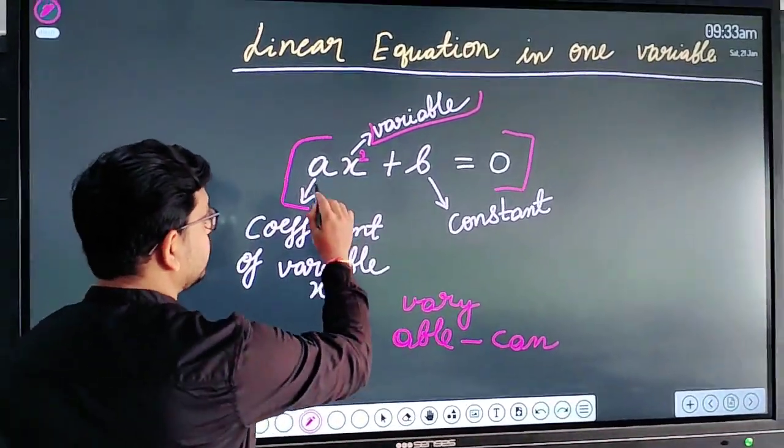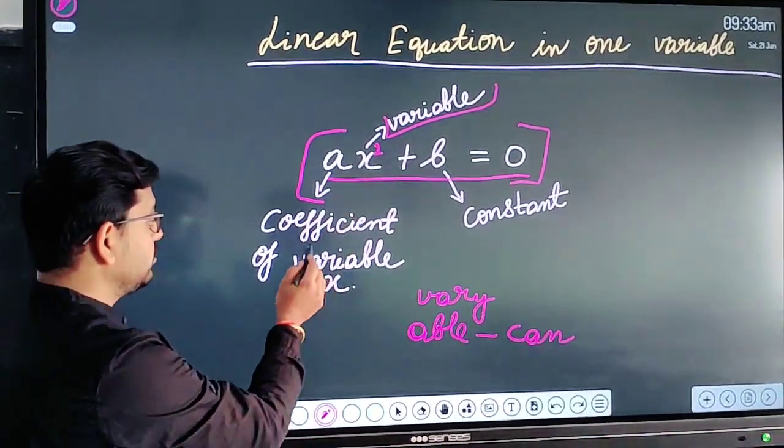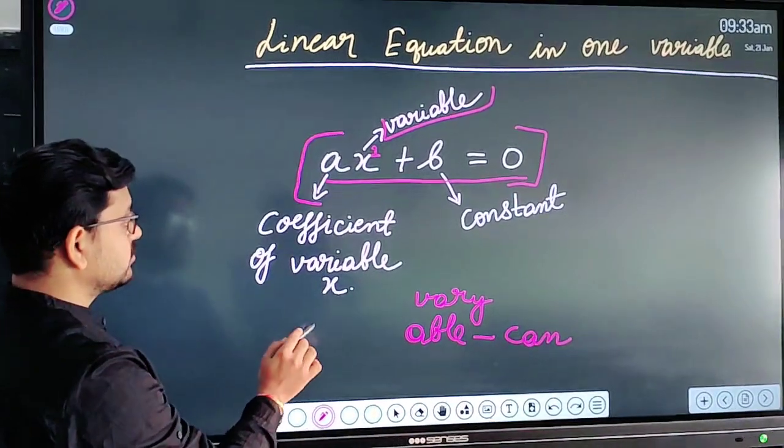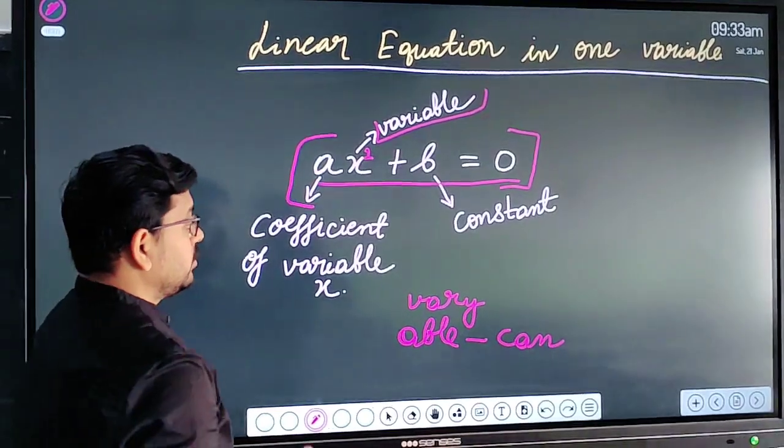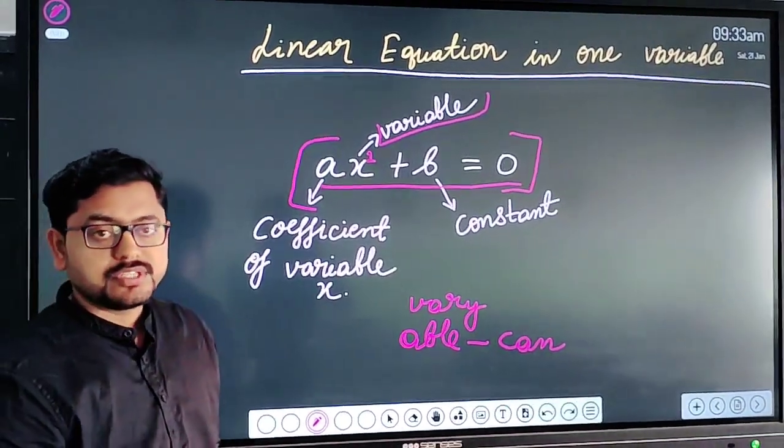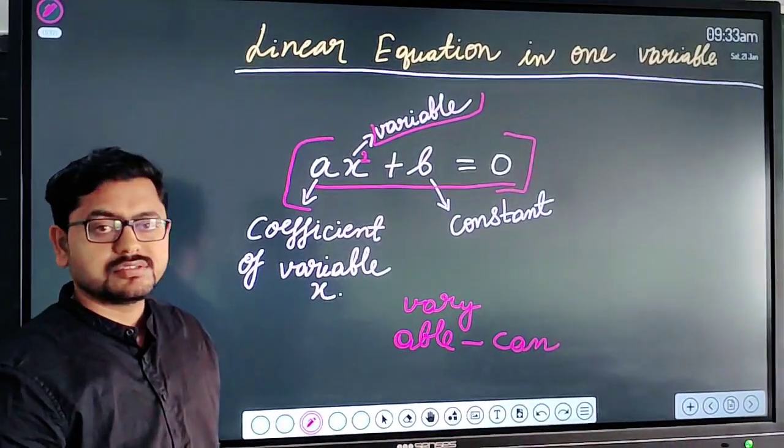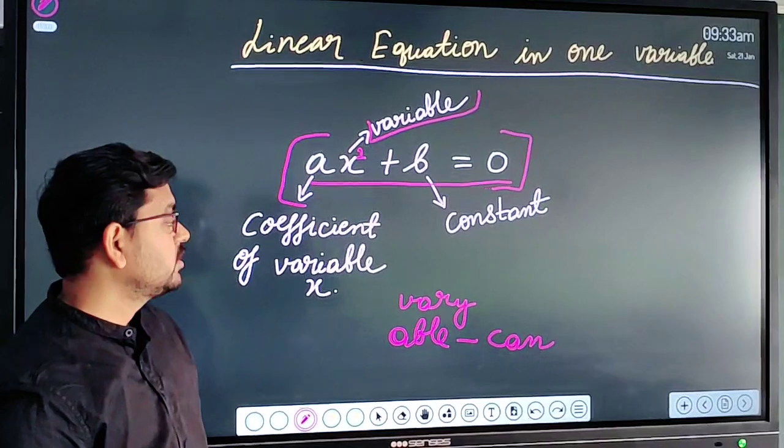So this is one general equation of linear equation. Now in this, what is a? a is the coefficient of variable x. b is our constant. Constant means any type of number that cannot change its base value and that is known as constant.